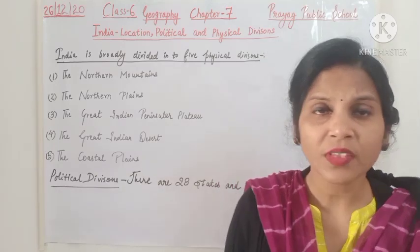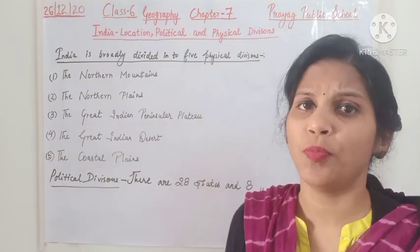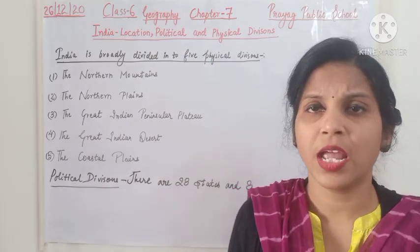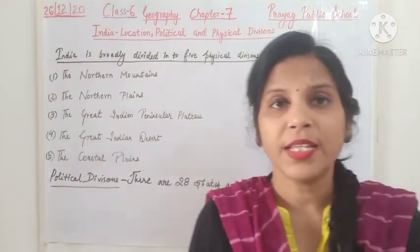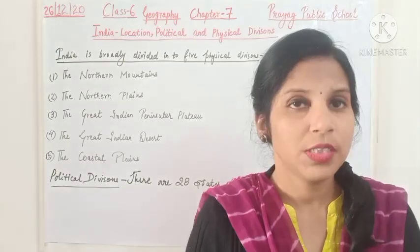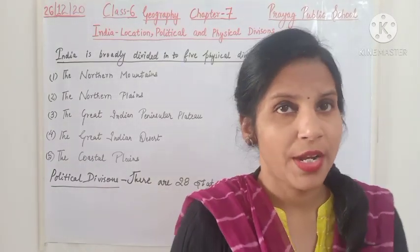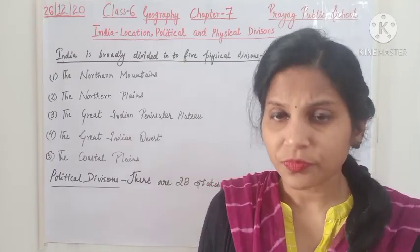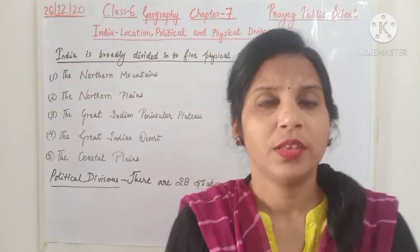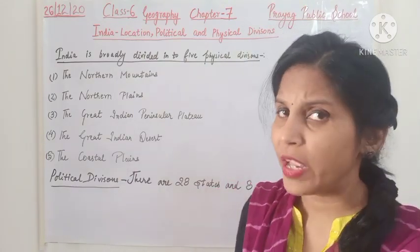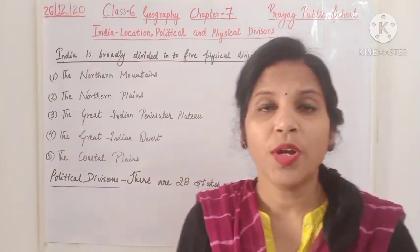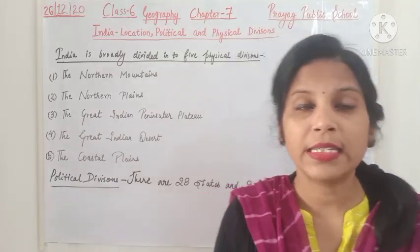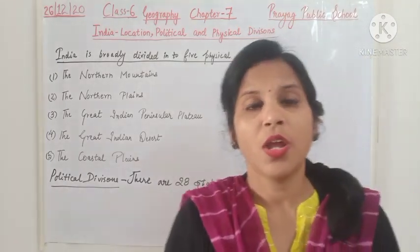The desert areas are very sparsely populated because the climate is not favorable and facilities are not available. The fifth and last physical division is the Coastal Plains — plains near the coast, along the sea. Areas like Maharashtra and Gujarat have coastal plains. So the five physical divisions are: Northern Mountains, Northern Plains, Great Indian Peninsular Plateau, Great Indian Desert, and Coastal Plains.